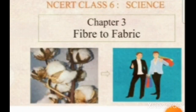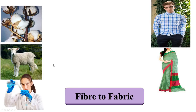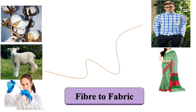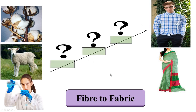Good morning, dear students. Welcome back to science class. Let us begin today's class with Chapter 3: Fiber to Fabric. This is how fibers obtained from plants, animals, or chemicals get ultimately converted into clothes we wear. Watch this video till the end to understand the complete process step by step.